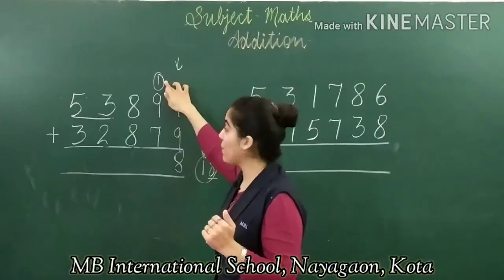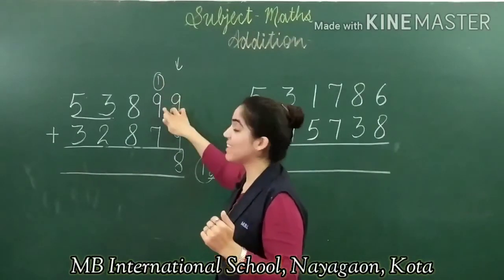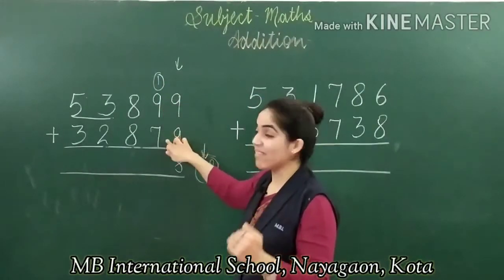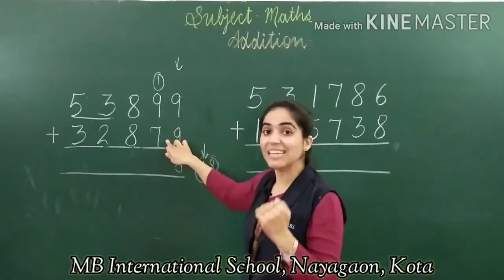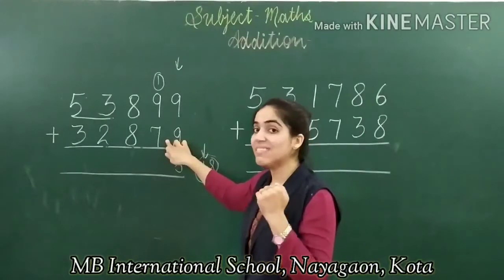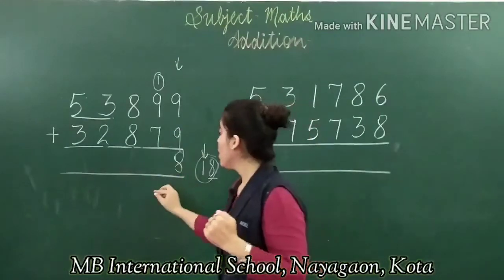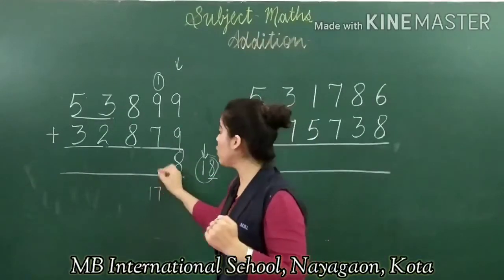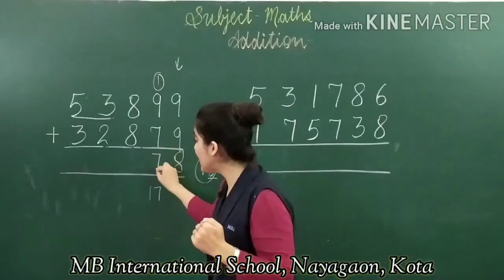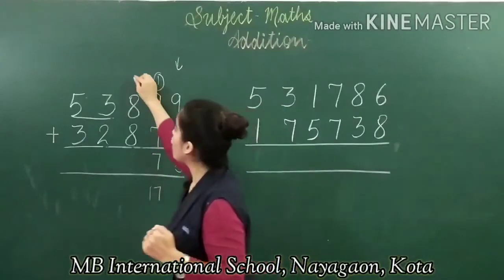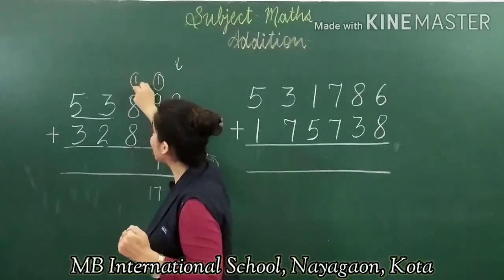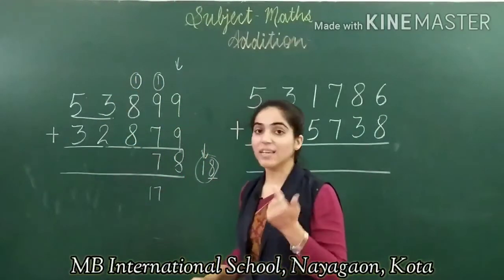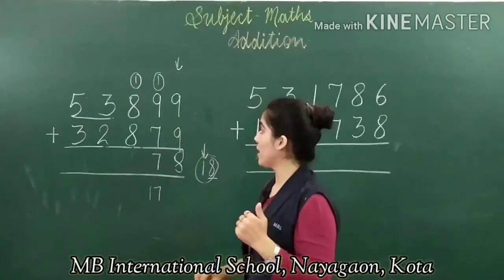Now adding the tens place: one carry plus nine is ten, and ten plus seven is seventeen. We get the answer seventeen. We cannot write seventeen, so seven goes below and one will be carried forward as carry.